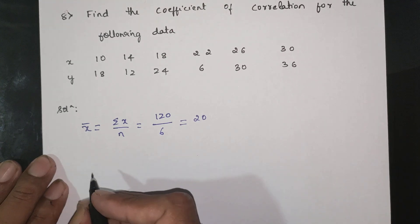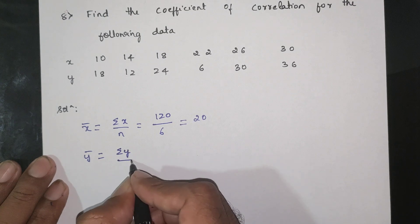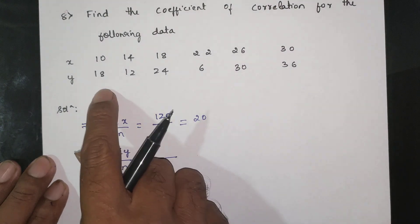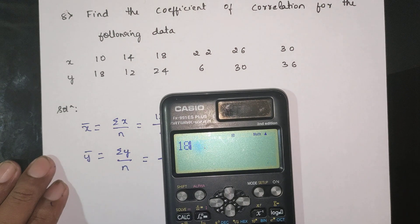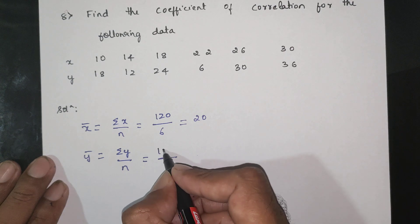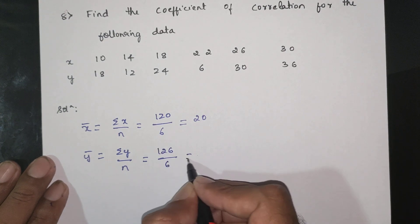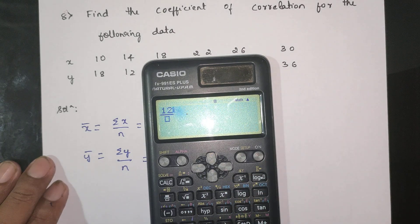Next, calculate y-bar, which equals the summation of y divided by n. 18 plus 12 plus 24 plus 6 plus 30 plus 36 equals 126. So 126 divided by 6 equals 21. Therefore y-bar equals 21.